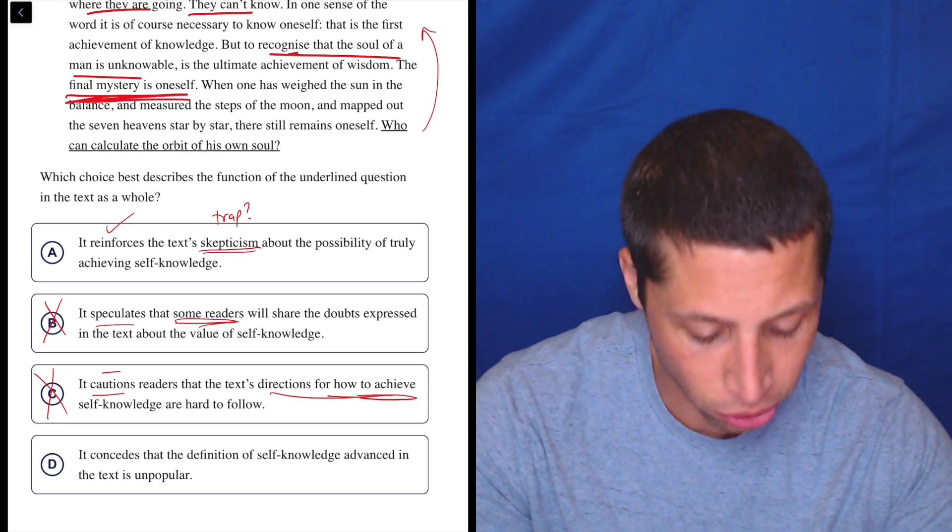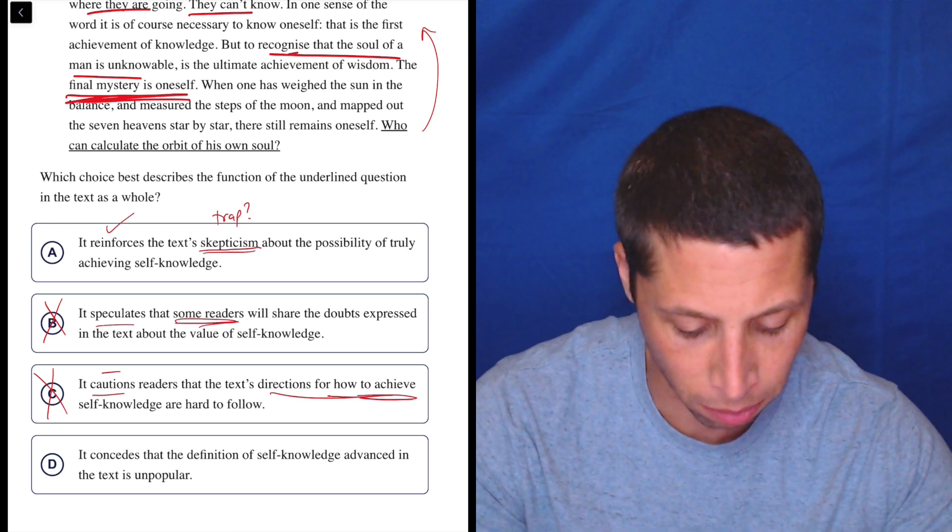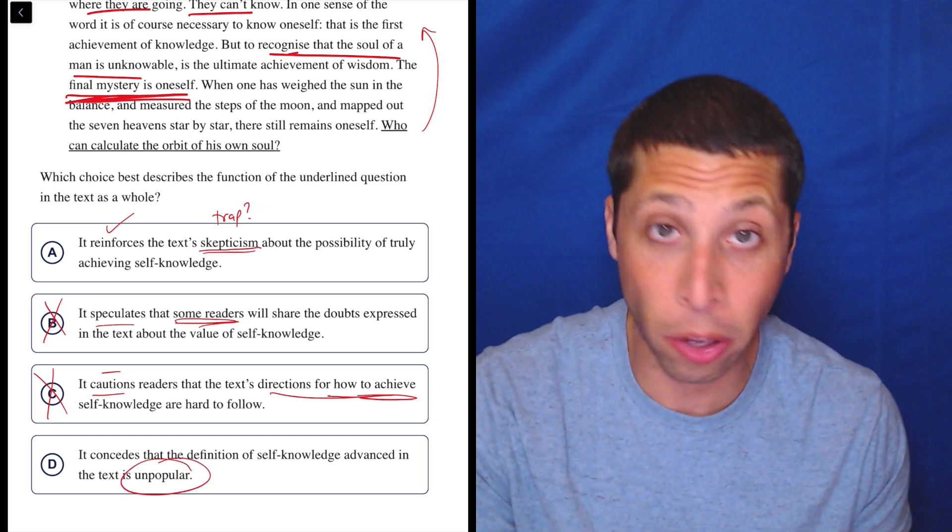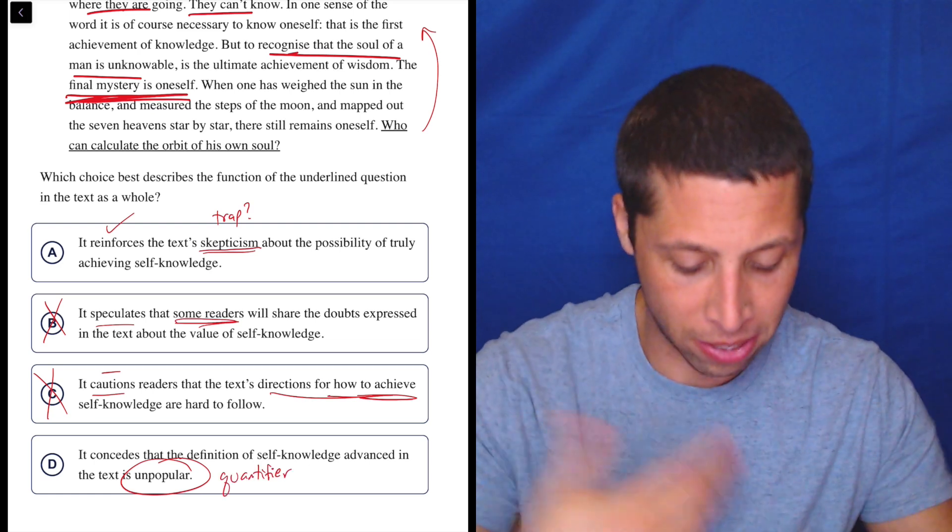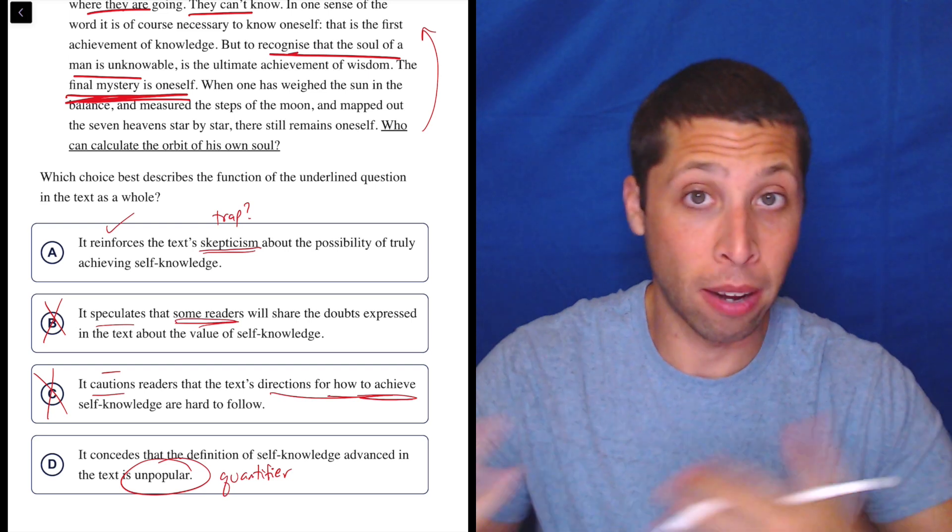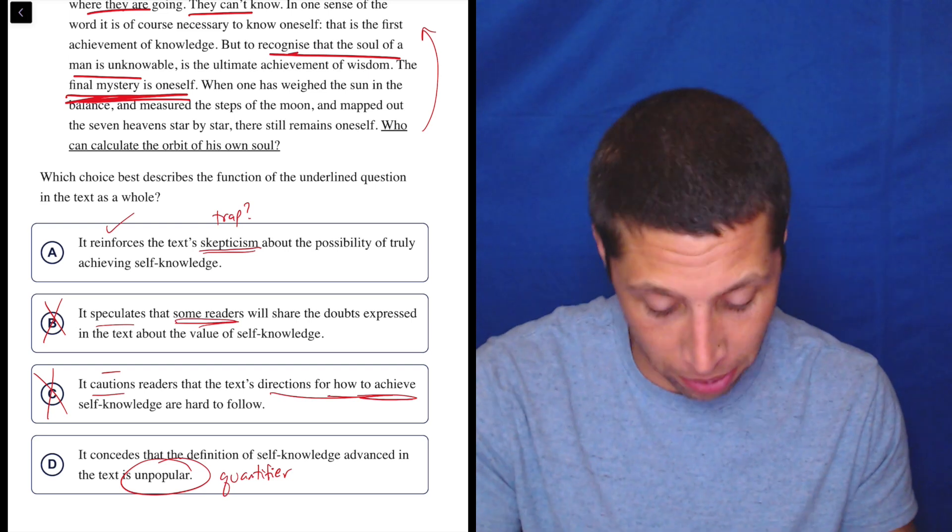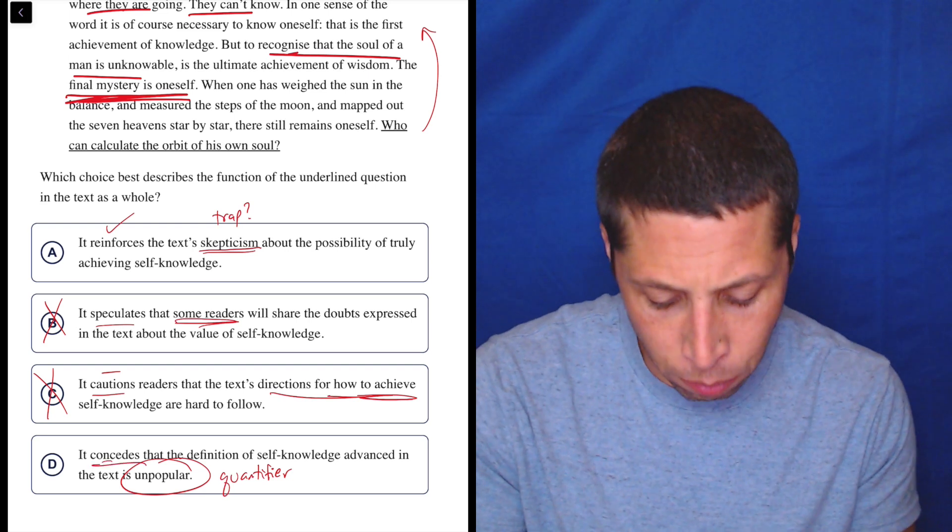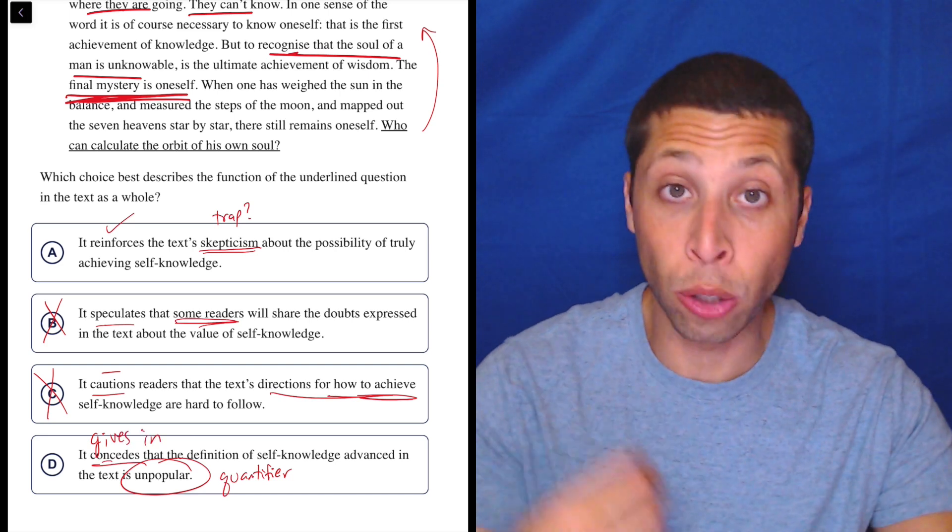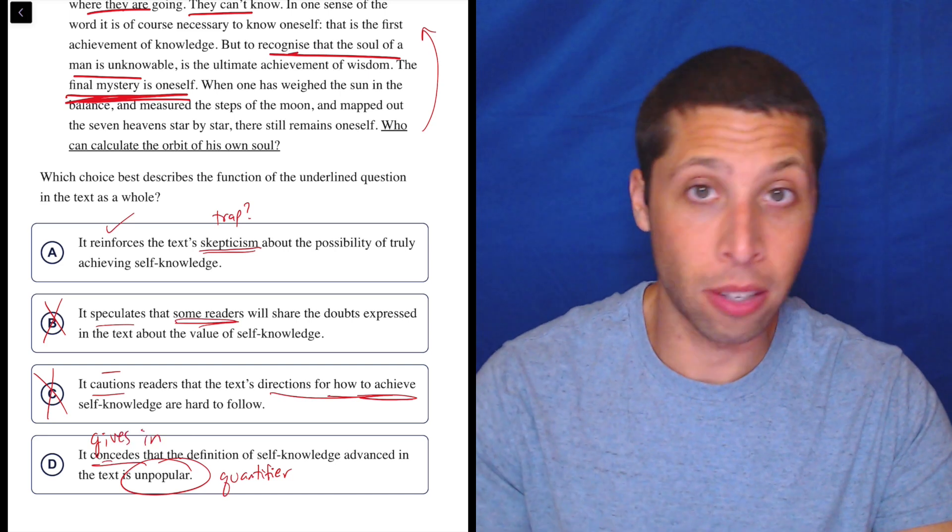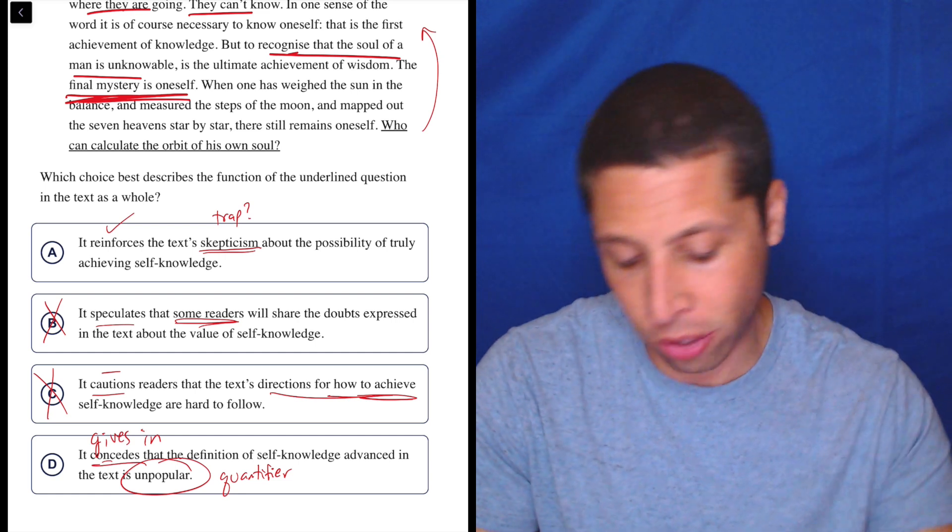D, it concedes that the definition of self-knowledge advanced in the text is unpopular. I have no idea what other people think. This is actually a word that strikes me as a quantifier. It seems to be saying lots of people believe something. I have no idea. This is one author's opinion. And concedes, that word means kind of like gives in or agree, but agree in a reluctant way. It doesn't seem like this is an agreement of anything. It is a question.